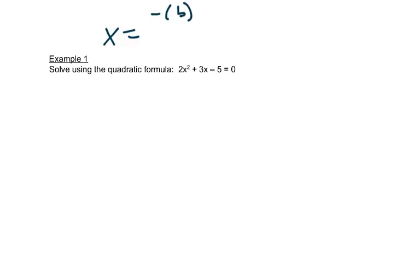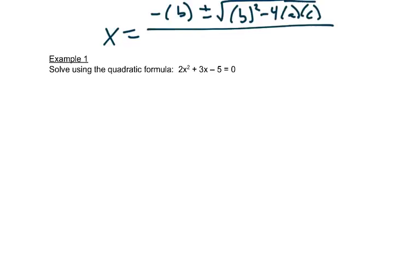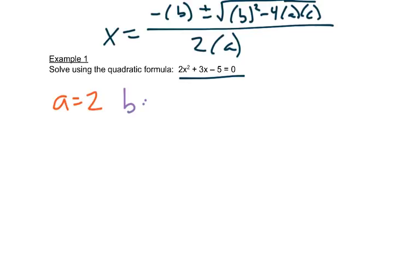I'm going to write the formula on the top of this screen so that we have it to look back at. It's a good idea to write the formula for every problem you're doing so that you are careful about where you're putting in the letters. This equation is already in standard form, and it tells me that a is 2, b is 3, and c is negative 5.